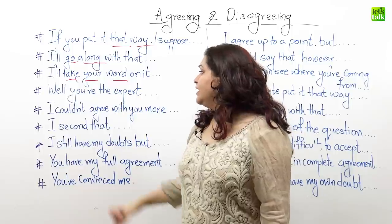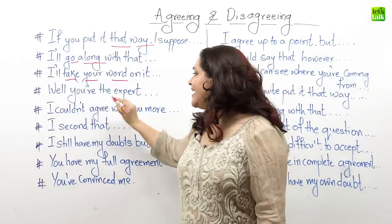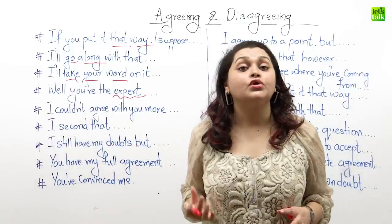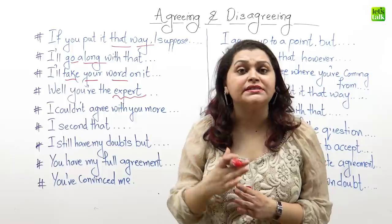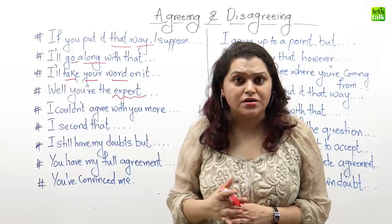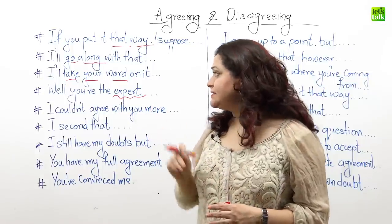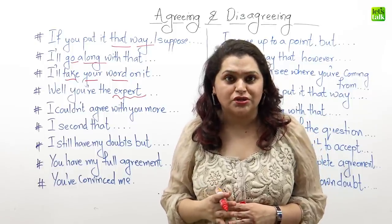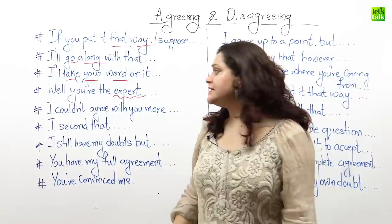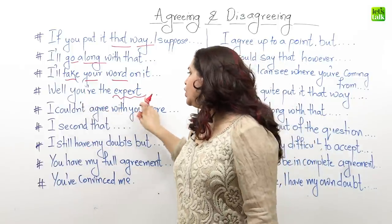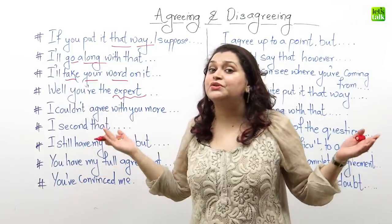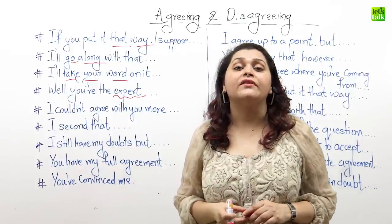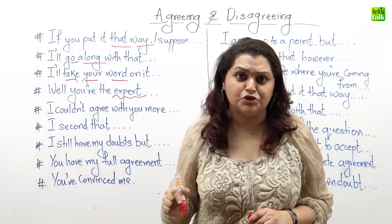Moving on, now there are some areas in which Dan is the expert. He has more knowledge than Sally on certain fields of work. In such cases, Sally agrees with him because he has more knowledge. She can say 'well, you're the expert and hence I have to agree with you.' So that's how you agree with people who have more knowledge than you on a particular subject.